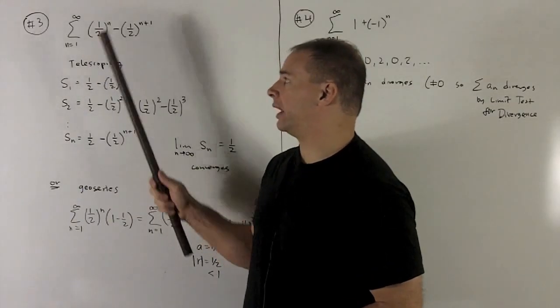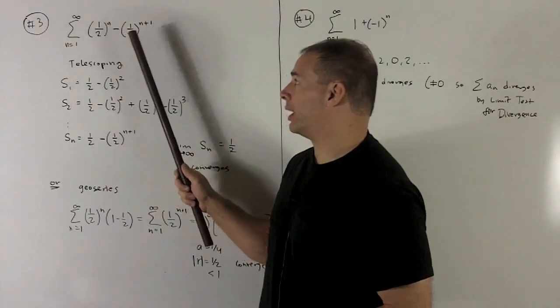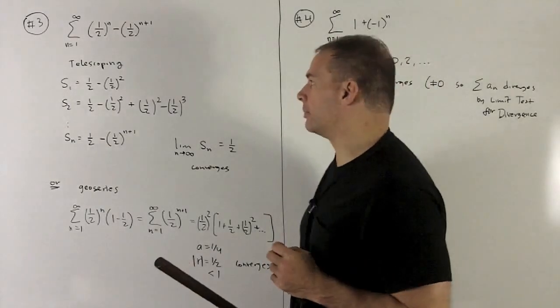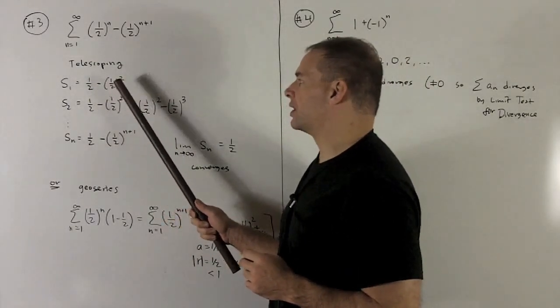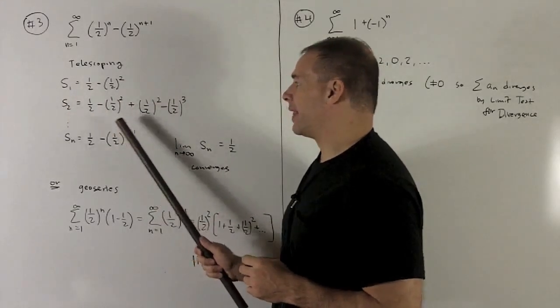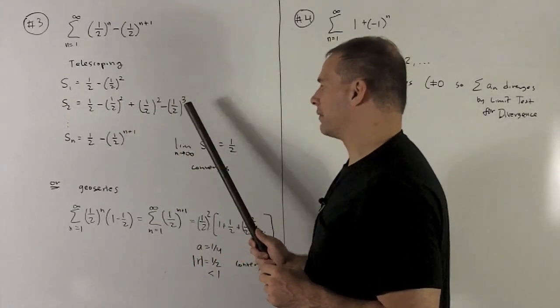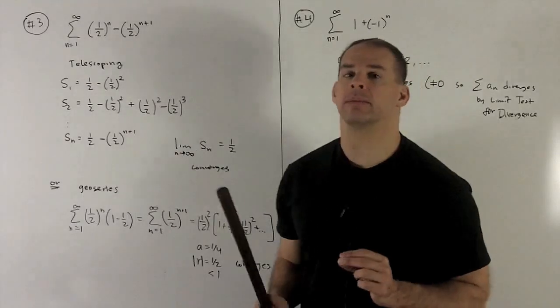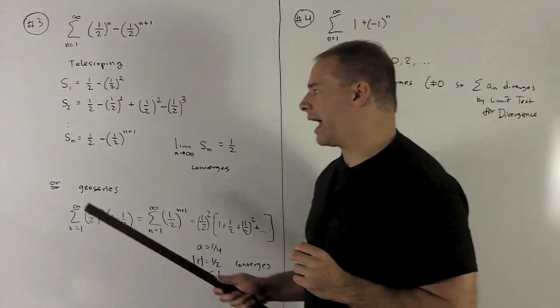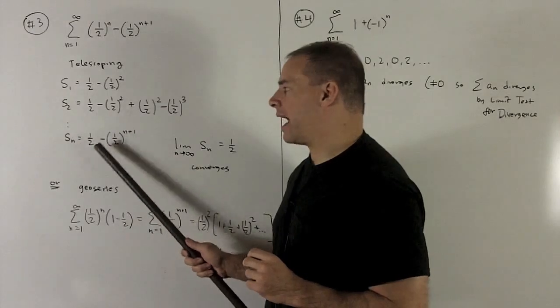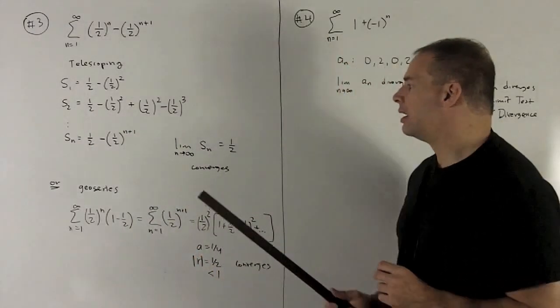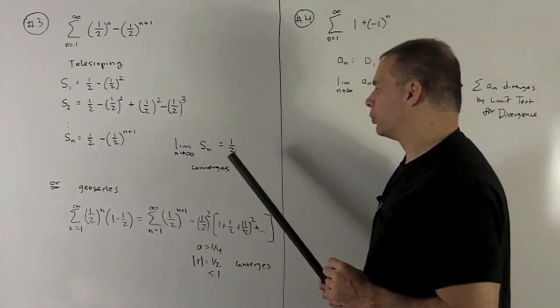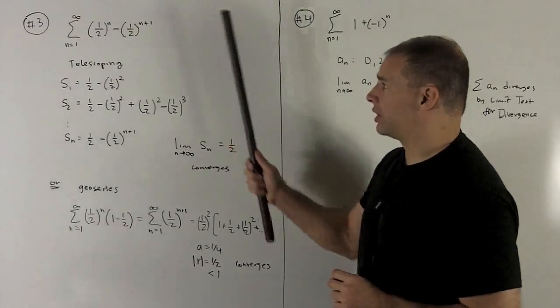I have the series sum from 1 to infinity, (1/2)^n - (1/2)^(n+1). So this looks like a telescoping series, so let's take a look at the partial sums. So S₁ is 1/2 - (1/2)². S₂ is that term plus (1/2)² - (1/2)³. And we notice the inside is going to collapse out, leaving me with 1/2 - (1/2)³. We do this in general. We'll note that we have for the nth partial sum, 1/2 - (1/2)^(n+1). If I take the limit of our partial sums as n goes to infinity, this term's going to go to zero, and we're going to be left with one half. So this series definitely converges.